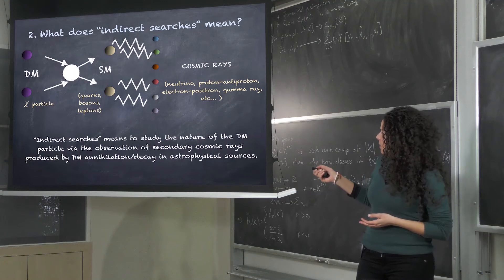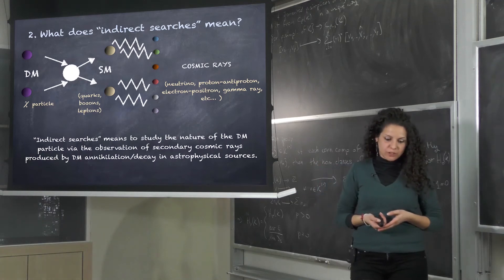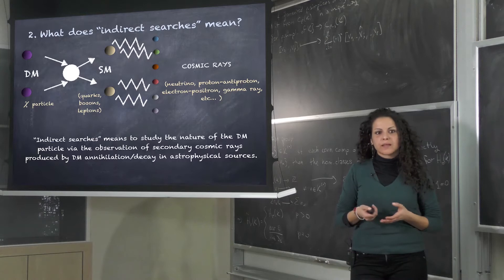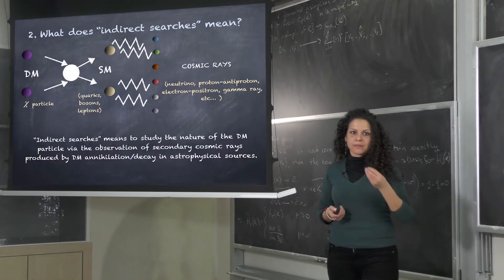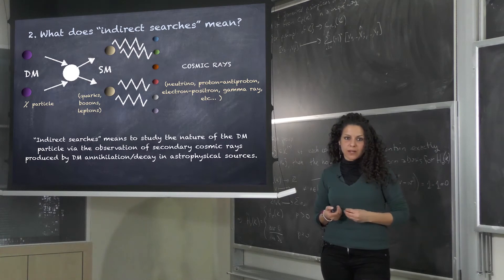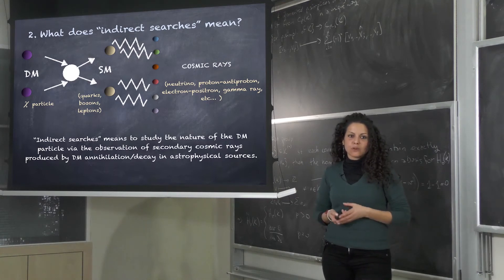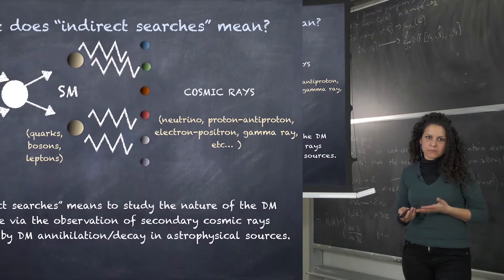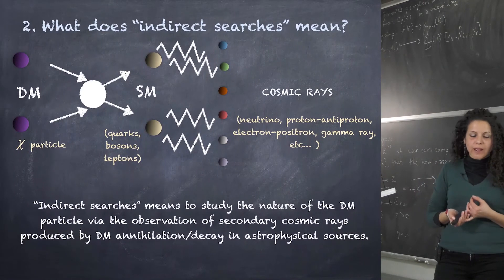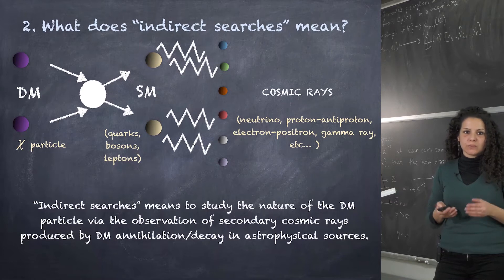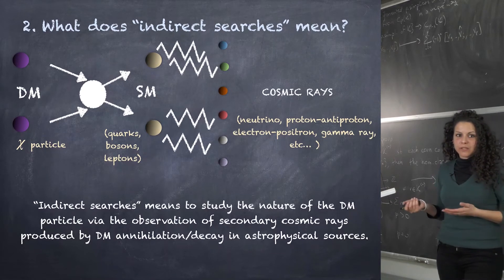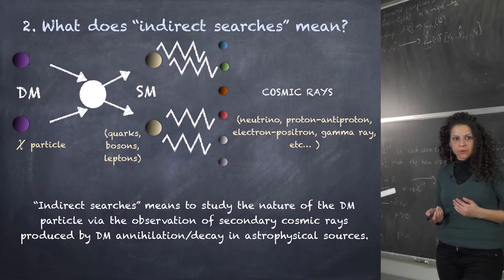The standard model particles generated by dark matter interactions can again annihilate and generate cosmic rays. These cosmic rays can be detected on Earth via experiments. Indirect searches means trying to constrain the mass of the dark matter particle and the way it interacts with standard model particles by observing the cosmic rays coming from astrophysical sources.